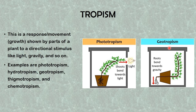In geotropism, the root of the plant bends towards gravity — this is positive geotropism — while the shoot grows away from or against gravity, which is negative geotropism. The shoot undergoes positive phototropism, while the part not exposed to light undergoes negative phototropism.